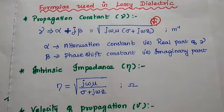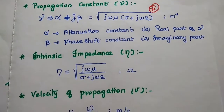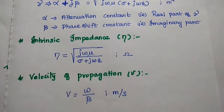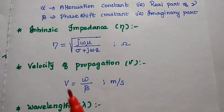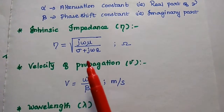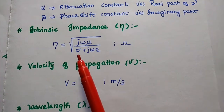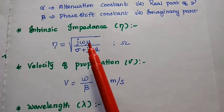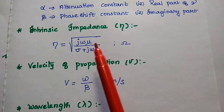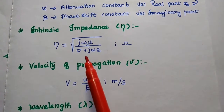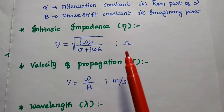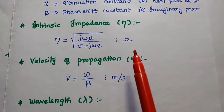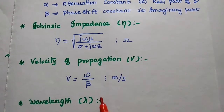The next one is intrinsic impedance eta. Eta is equal to the square root of j omega mu divided by sigma plus j omega epsilon. Its unit is ohm.